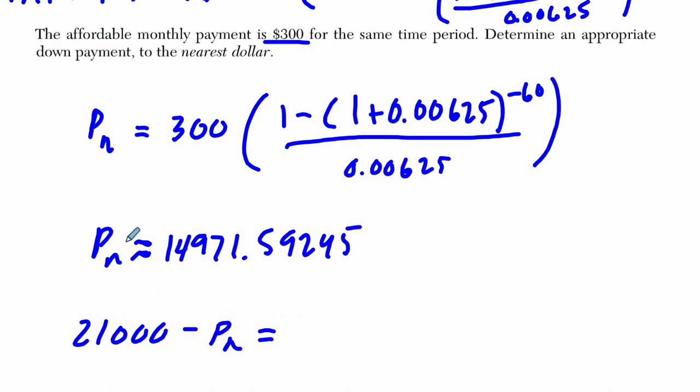It's saying here, if you borrow $14,971 and about $0.59, your monthly payment to pay this off over 60 months will be about $300 per month.